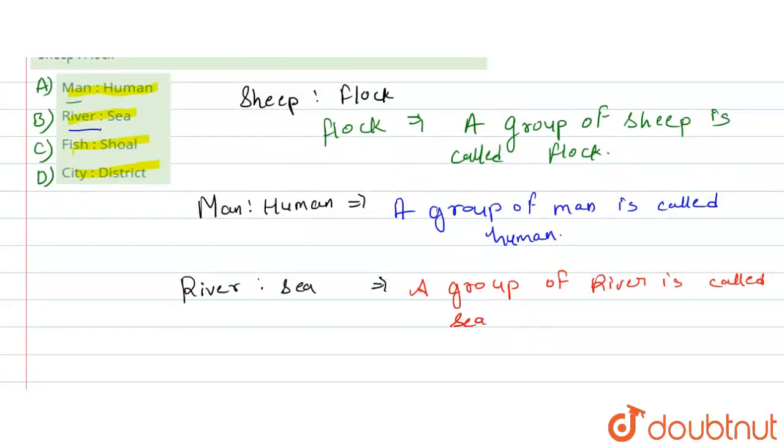Then, we have given fish and shoal. So, what is shoal? A large group of fish that feed and swim together.